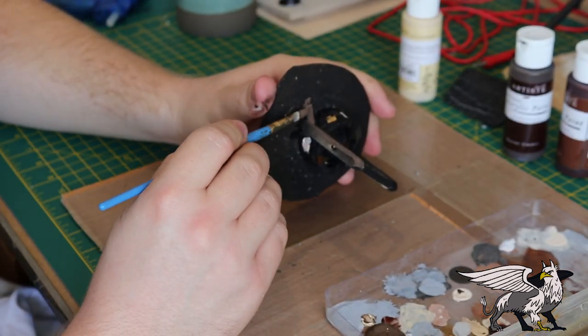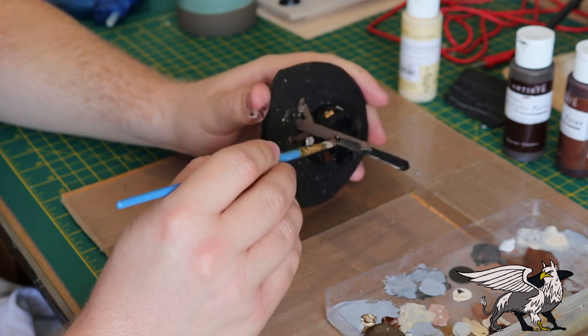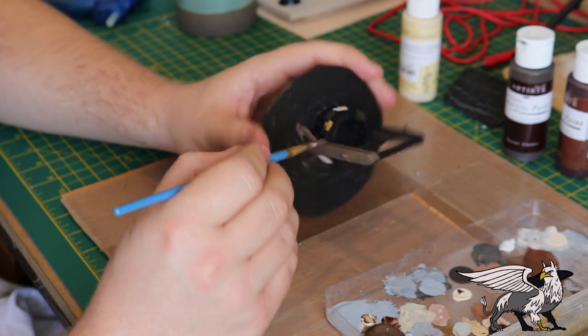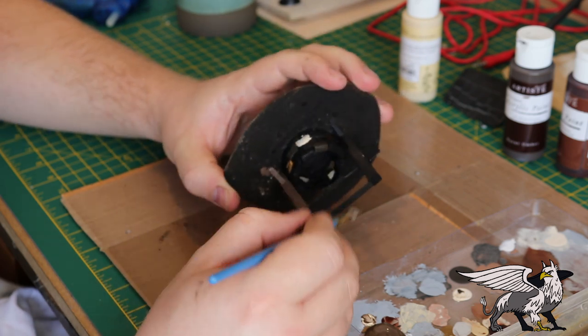And then I moved on to the woodwork. For that I'm using a burnt umber, which is a very dark brown. This is a different method than I'd normally use, but I thought I wanted to give it a go, see if I could make an interesting weathered wood look. So I'm trying it out on this piece of terrain.